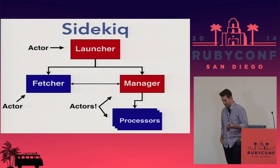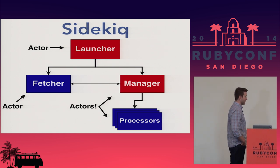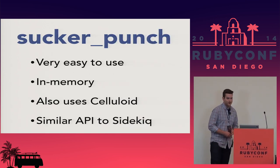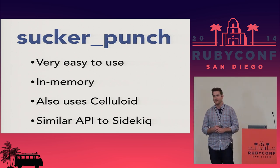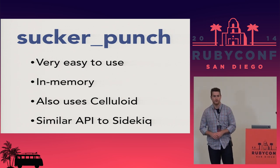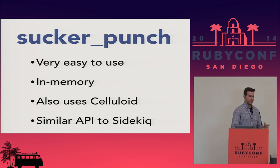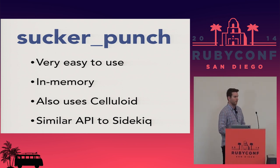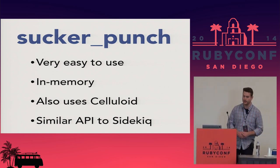There's another really cool background job library called Sucker Punch, made by Brandon Hilkert, also using Celluloid. It's completely in memory and has the same API as Sidekiq, so if you need to upgrade later it's very simple. You don't want to use Sucker Punch for very important jobs because it's in memory — if your process crashes, your queue is gone. But for prototyping and things like that, it's awesome.